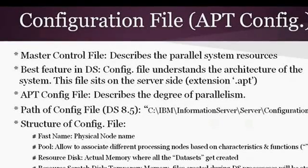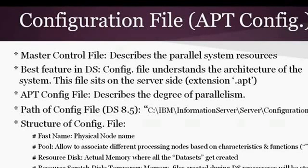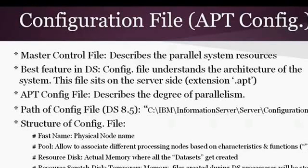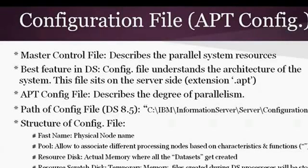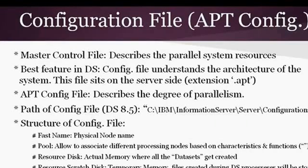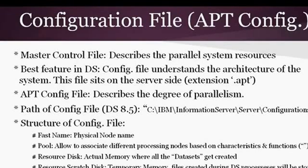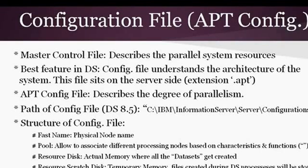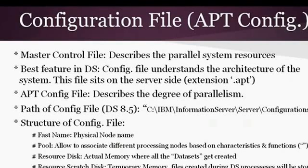The nodal information and all settings are stored in the configuration file, also called the APT config file. It's basically the master control file that sits on the server. This file has all the information about parallel system resources and the data stage architecture, and it describes the degree of parallelism. If someone asks what the configuration file means, you can say it denotes a degree of parallelism. In version 8.5, the APT config file is stored in a specific path on the server.